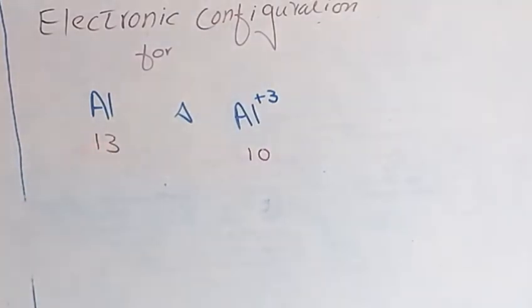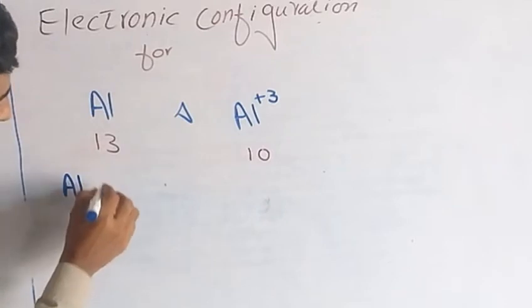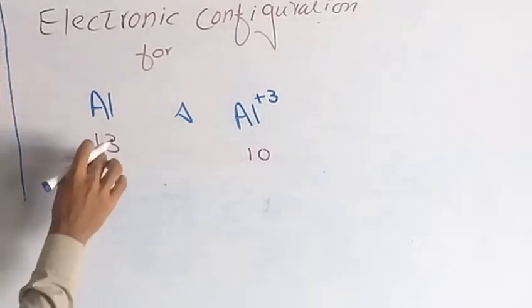Now we next move to the electronic configuration of aluminium. That is aluminium, its atomic number is 13.